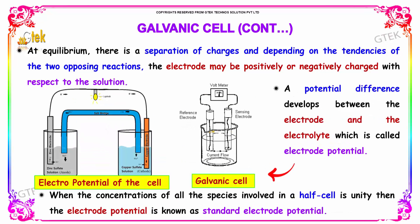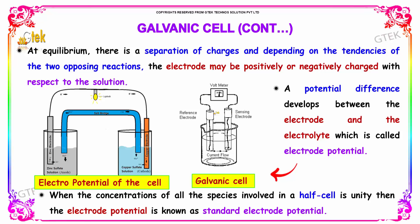At equilibrium, there is a separation of charges, and depending on the tendency of the two opposing reactions, the electrode may be positively or negatively charged with respect to the solution. A potential difference develops between the electrode and the electrolyte, which is called the electrode potential. When the concentration of all species involved in the half cell is unity, the electrode potential is known as the standard electrode potential.